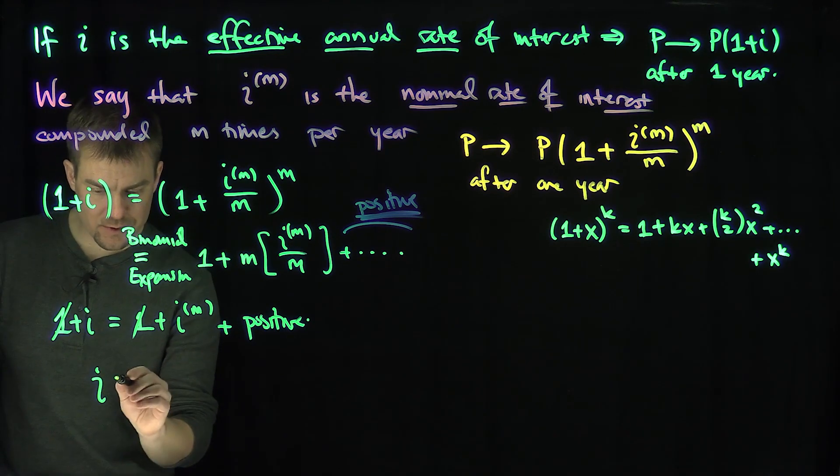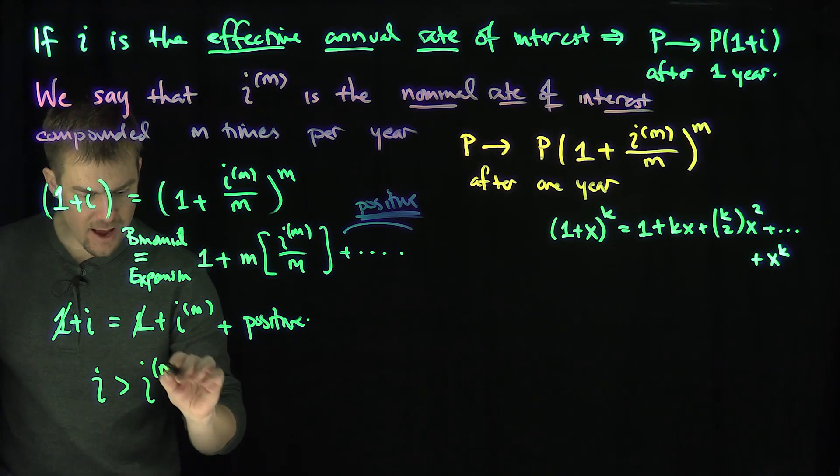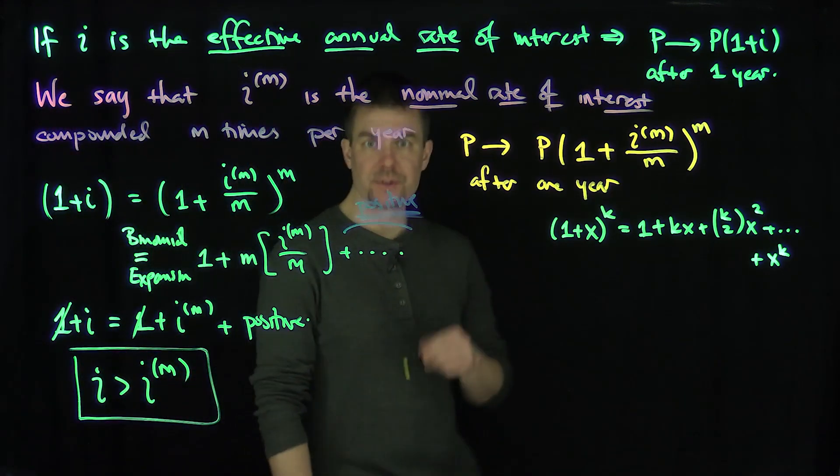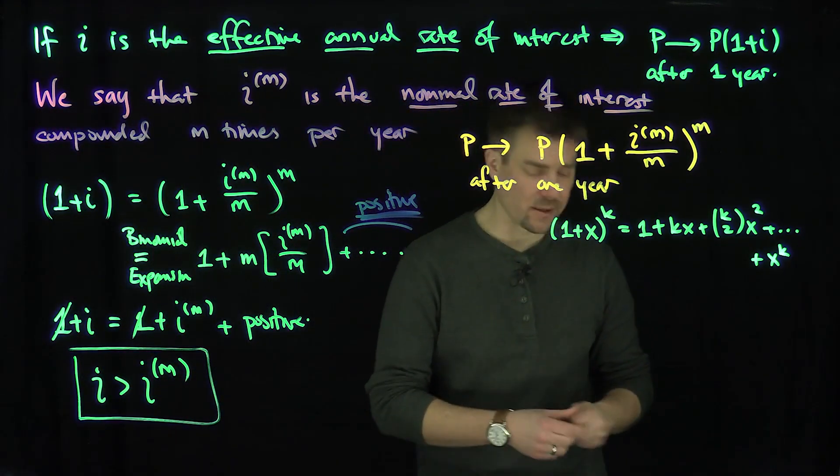So i, the effective annual rate of interest, is always greater than the mth nominal rate of interest. That's an important relationship between effective annual interest and nominal interest. Let's see a quick example of this.